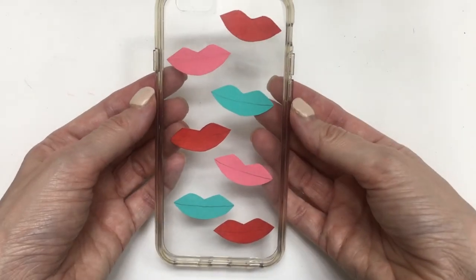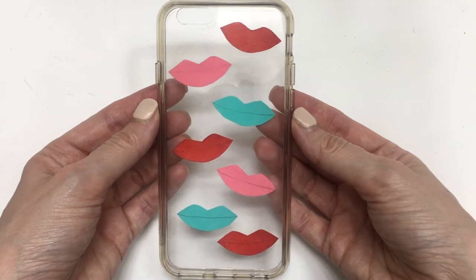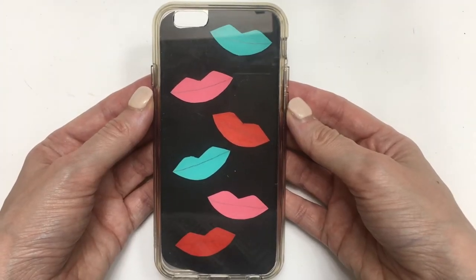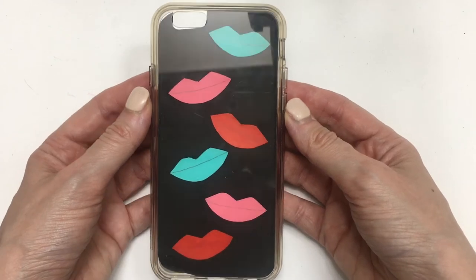I think it looks really cute. And I also made another one. Instead of using an acetate sheet, I used a black piece of paper. I think it's super cute as well. Those colors really pop up.